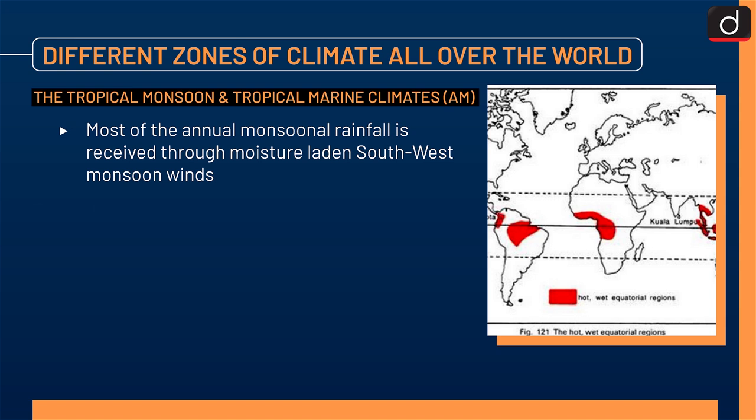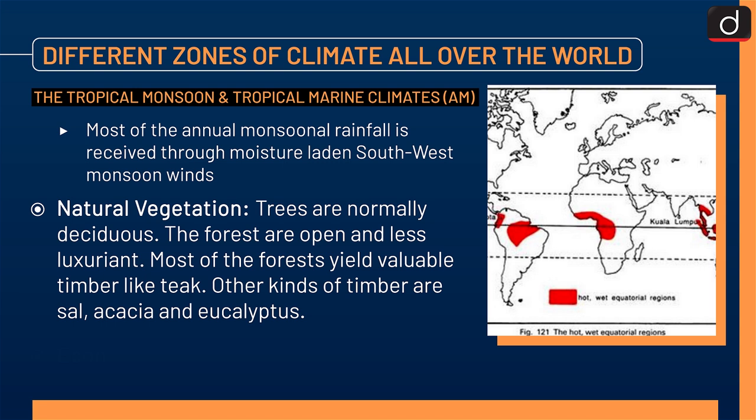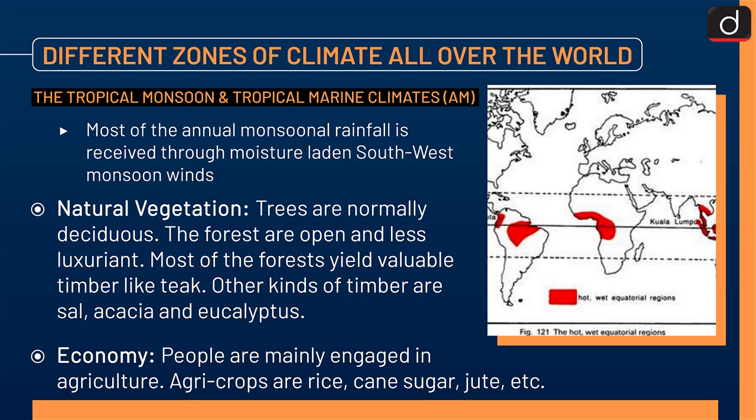Natural vegetation: trees are normally deciduous. The forests are open and less luxuriant. Most of the forests yield valuable timber like teak. Other kinds of timber are sal, acacia, and eucalyptus. Economy: people are mainly engaged in agriculture. Agricultural crops are rice, cane sugar, jute, etc.